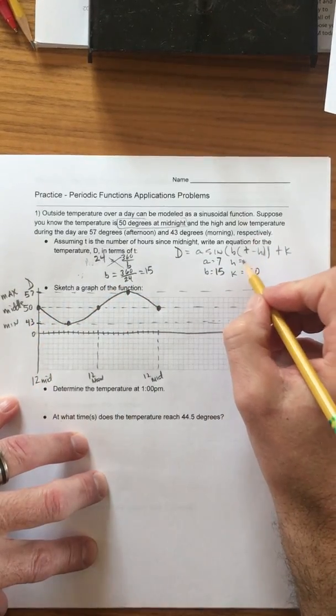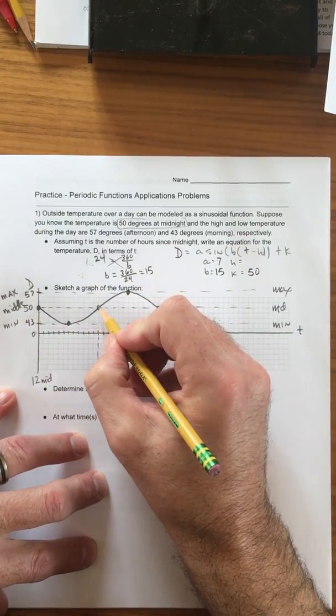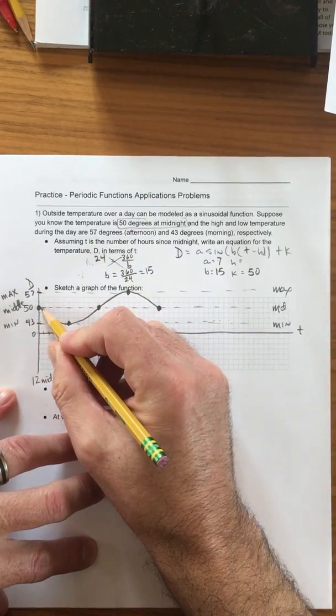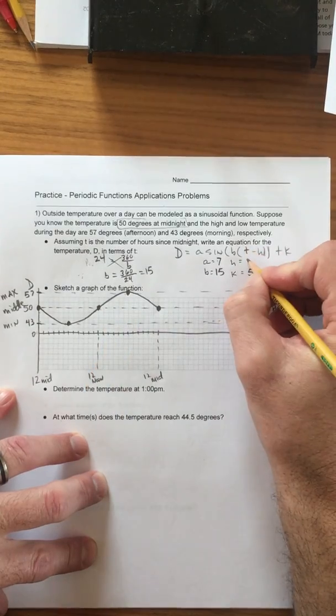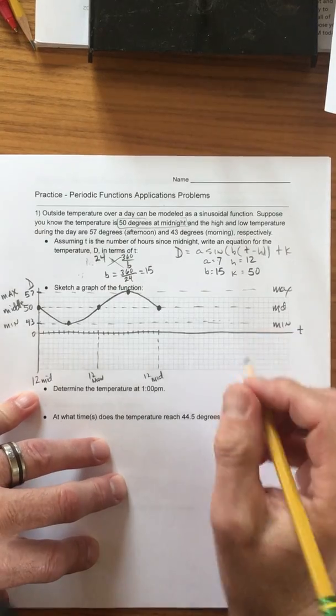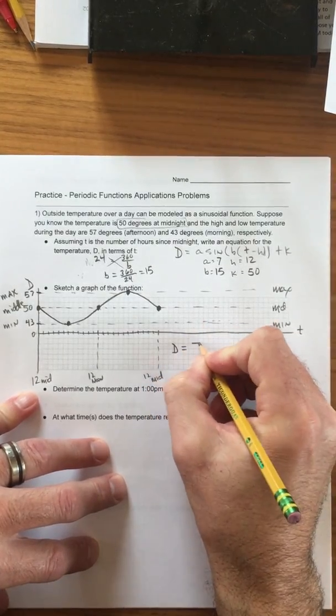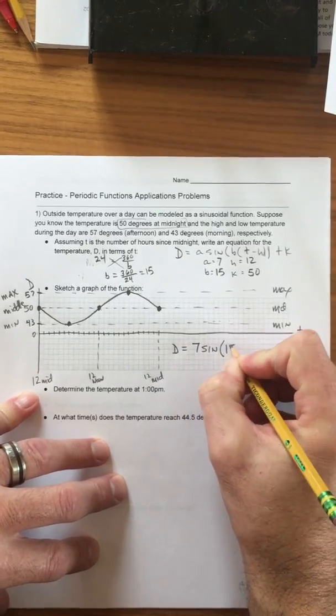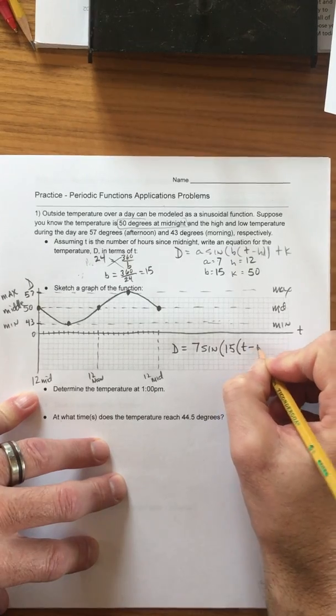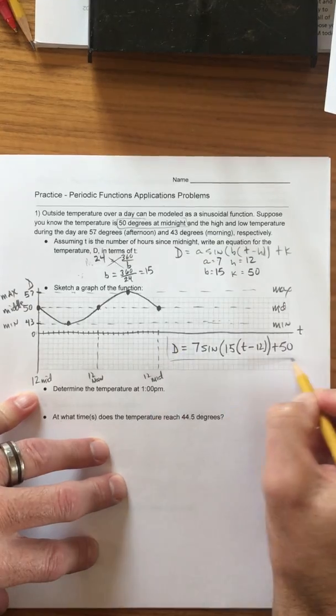So now we've got to figure out the H value. And the start of the sine is always in the middle going up. And so that's that spot, middle going up, and that's 12 hours. So the H is 12. So our temperature equation is going to be D equals 7 sine 15 T minus H plus K.